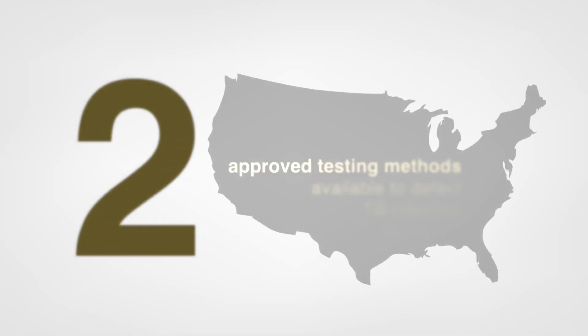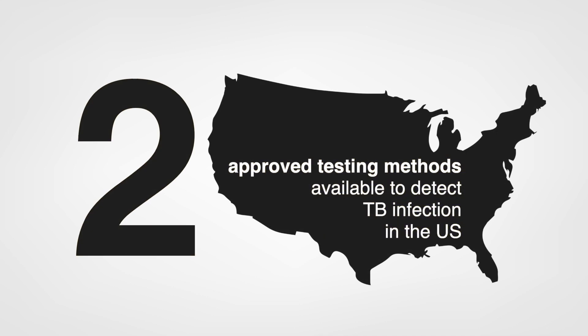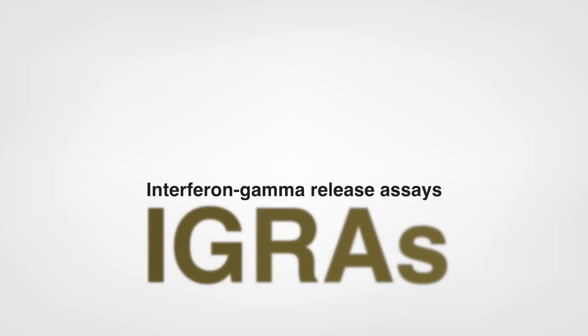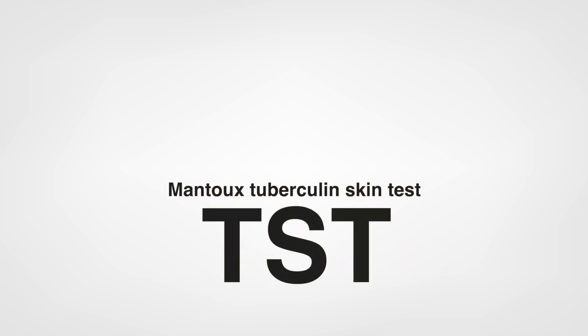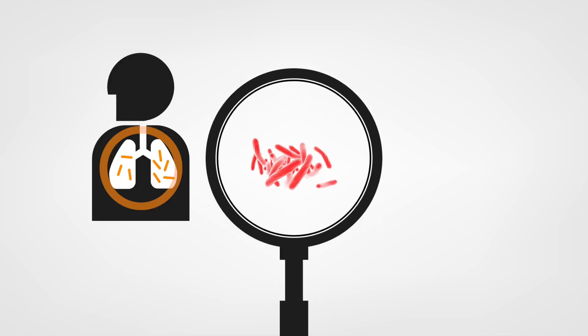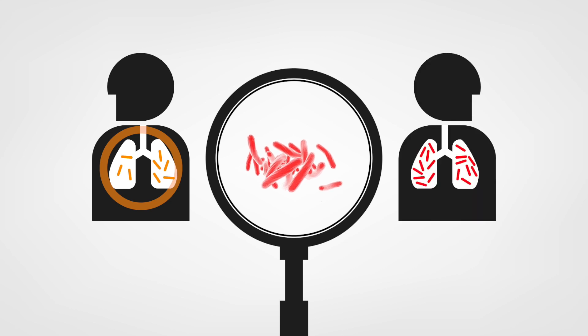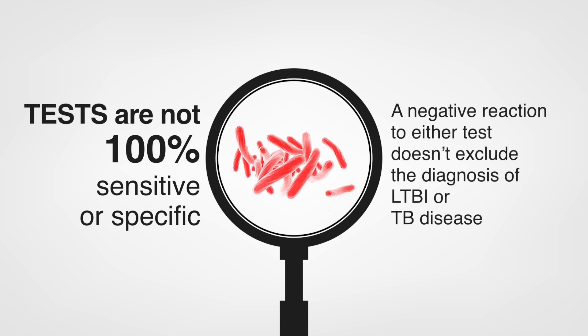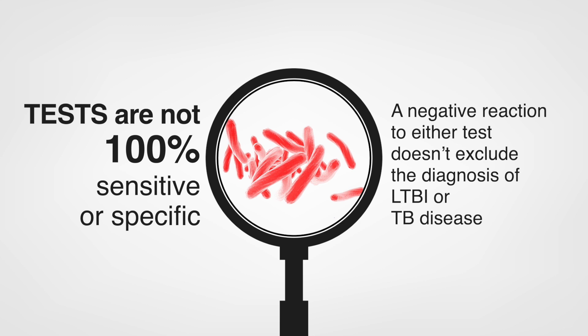There are two approved testing methods available to detect TB infection in the U.S.: interferon gamma release assays, also called IGRAs, and the Mantoux tuberculin skin test, also called the TST. These tests help identify people who are infected with M. tuberculosis, but cannot distinguish between latent TB infection and TB disease. These tests are not 100% sensitive or specific, and a negative reaction to either test doesn't exclude the diagnosis of LTBI or TB disease.